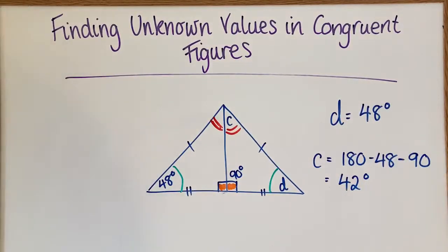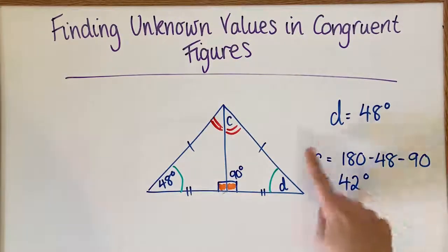All right. So with congruent figures, finding unknown values, you just need to pair up what matches. So you can use colour coordinating to help you and then you can just straight away find what it's equivalent to. Or you might need to do some solving to try and figure out what an unknown value is.